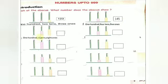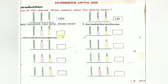Next one. In the 100's place, 1 bead — so 100. In the 10's place, 6 beads — so 6 tens. In the 1's place, 8 beads — so 8 ones. 100, 6 tens, 8 ones — so you can write 168.